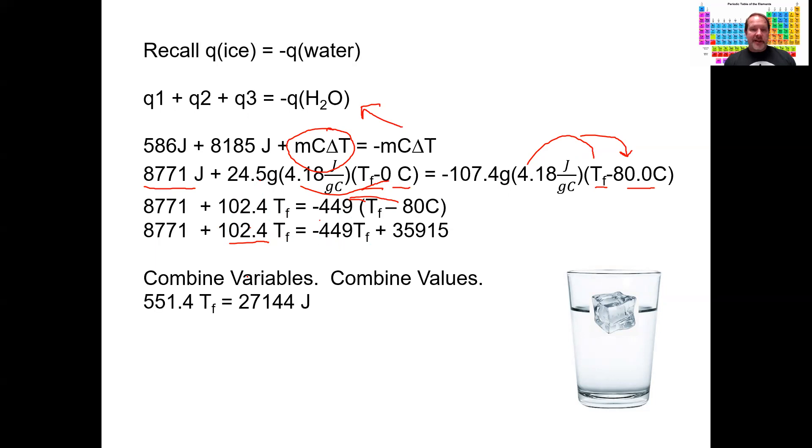That would require adding 449 T_f's to both sides and then subtracting 8,871 from both sides. If you do the math, you'll see you'll get this 551.4 temperatures into this 27,144 joules. So I'll just divide both sides by 551.4, and you'll see that's 49.2°C, and that is the final temperature of the water.